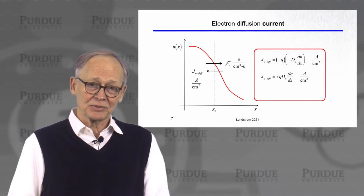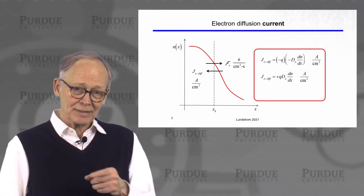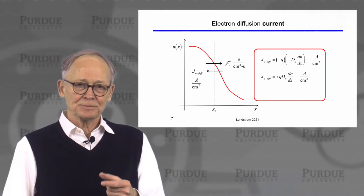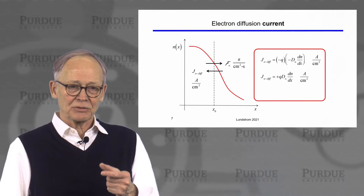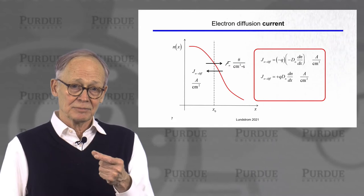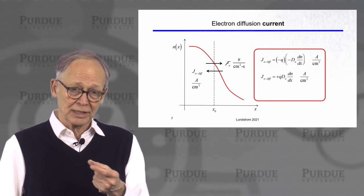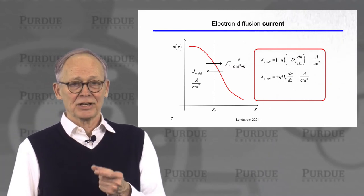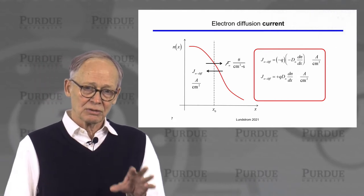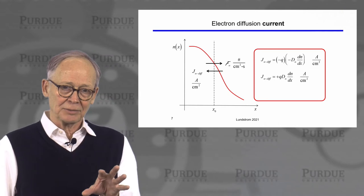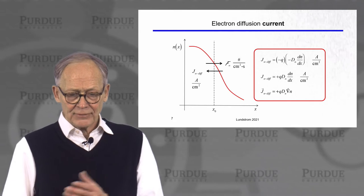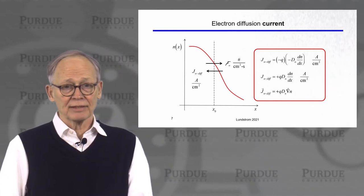Note that the electron diffusion current and the hole diffusion current have opposite signs, whereas in drift current they had the same sign. That's because drift current had two occurrences of the negative charge — electrons moved opposite to the electric field, and the charge was negative again — giving two minus signs. So both electron and hole drift currents had the same sign, but the diffusion currents have opposite signs. We can write all of this in 3D as well.